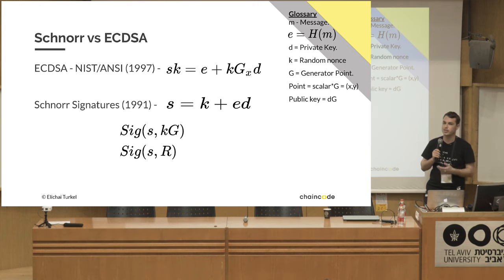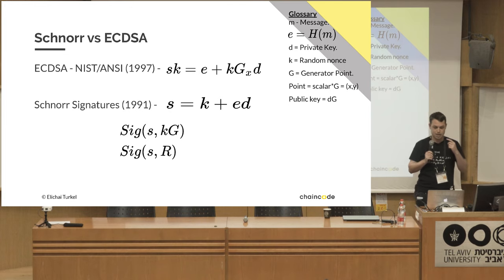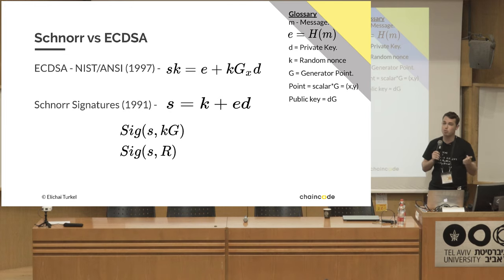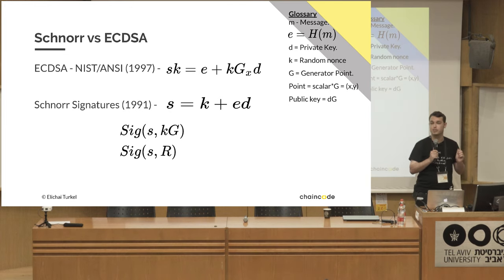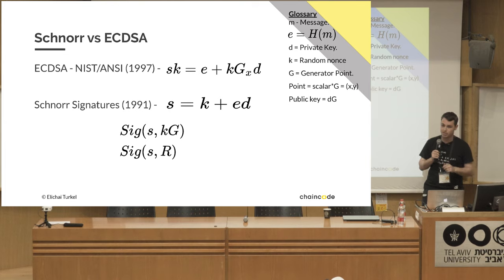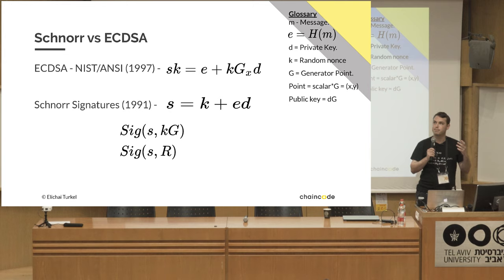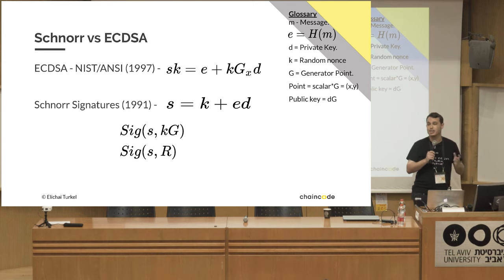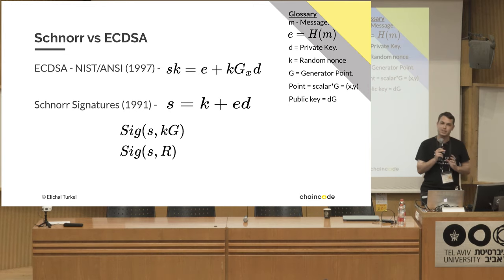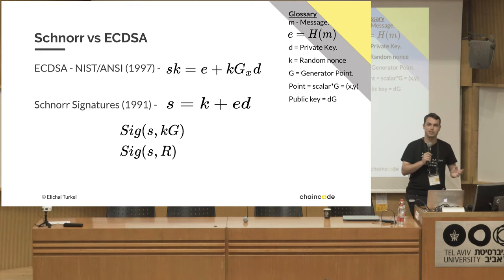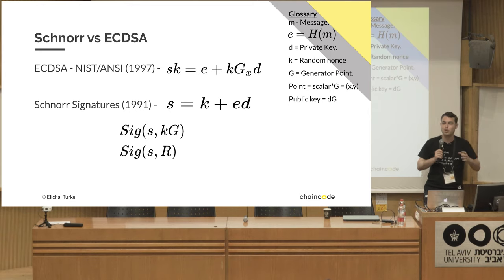ECDSA was standardized by NIST in 1997, but Schnorr was published six years before that. So why didn't we use Schnorr? It's hard to say, but possibly because it was patented — and it is NIST which is a government entity. There are some theories, but mostly it was because it was patented.